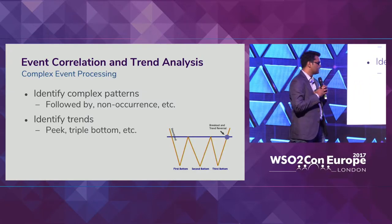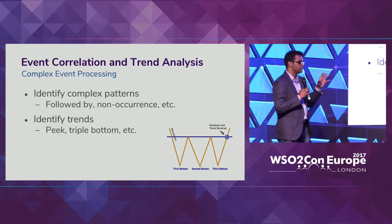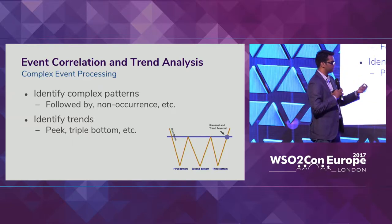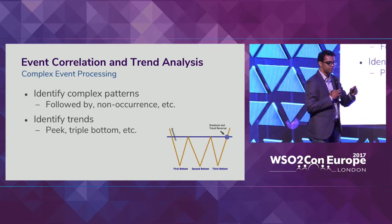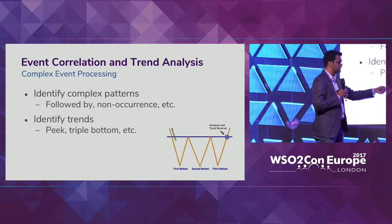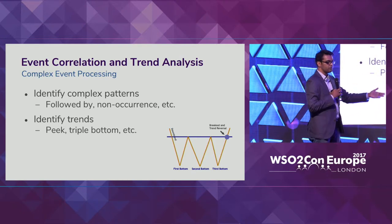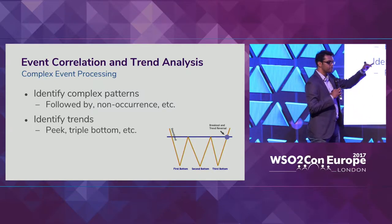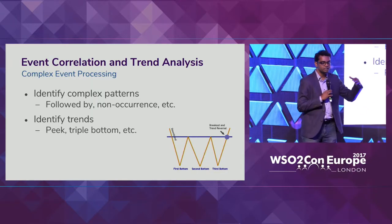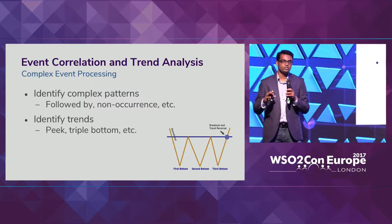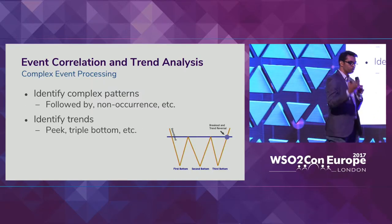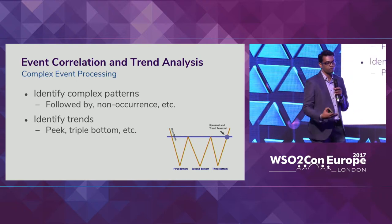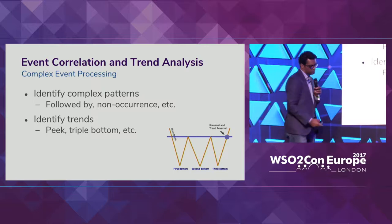The fifth pattern is correlation, the most important aspect of stream processing. We identify complex event patterns: this event happened, then after some time another event happened; or an event happened but a subsequent expected event did not occur — triggering an alert. Identifying trends like a continuously increasing value or a triple-bottom pattern are important. Implementing this in conventional languages like Java or Python is very hard; these constructs are provided natively through the Complex Event Processing side of the stream processor.